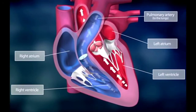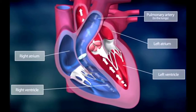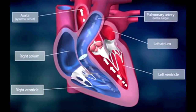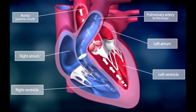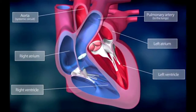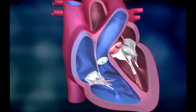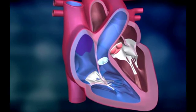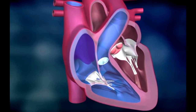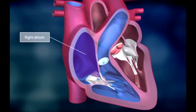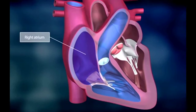The left side pumps the blood to all organs through the aorta and the systemic circuit. The pumping cycle begins when the oxygen-deprived blood returns from the body through the veins — the superior and the inferior vena cava — and into the right atrium.